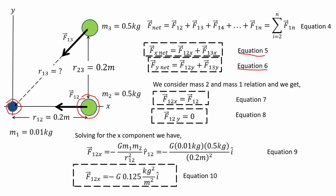So we can simply set the y-value of mass 2 as 0. Solving for the x-component for mass 2, we use equation 9 and substitute the known values. Here we initially keep the constant G to keep the equation simple and later use it in the final answer, as shown in equation 10.